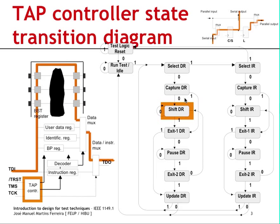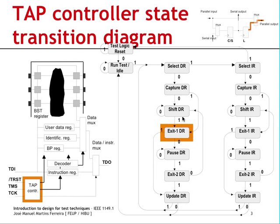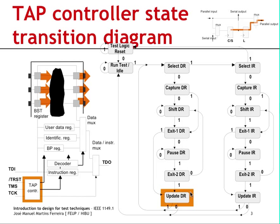As we exit capture data register, we capture what is present at the inputs of the cells. When reaching the shift data register state, the input multiplexer is set as shown, and we are now able to shift in the required test vector. For 18 cells, we remain here for 17 clock cycles, then at the last clock cycle we set TMS to 1 to leave the shift data register state as we shift in the last bit. When reaching the update data register state, the outputs of the cells are updated so the last stage receives what was temporarily stored in the capture-shift stage of every cell.